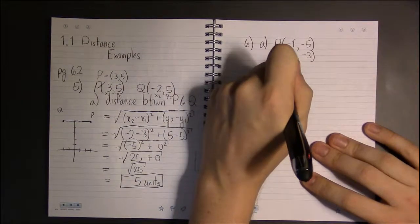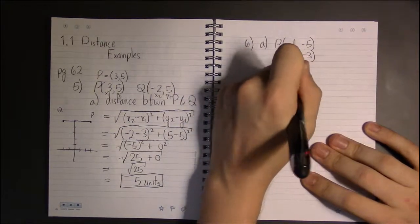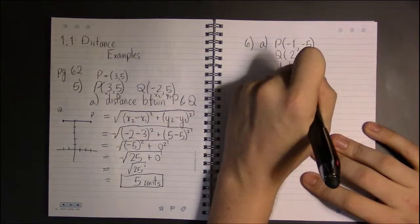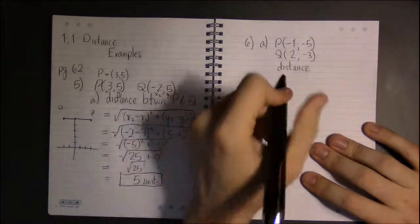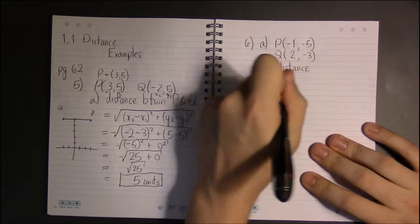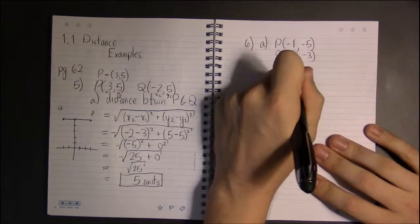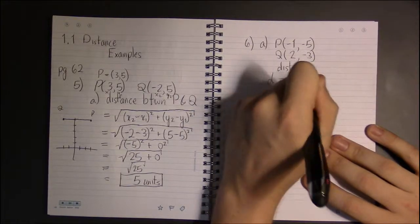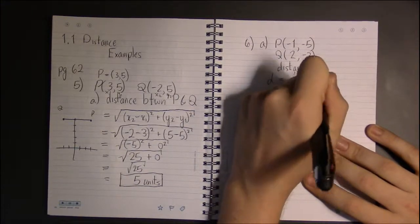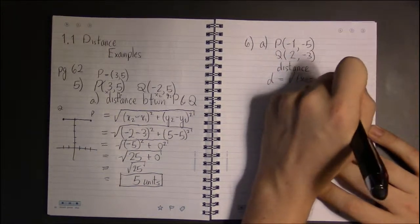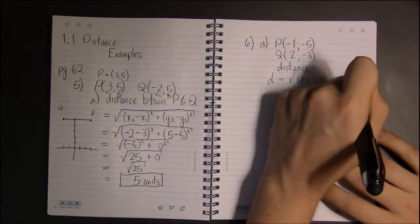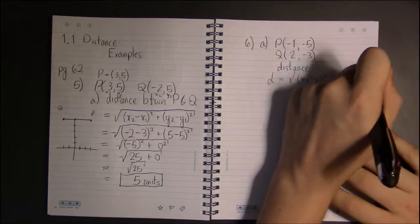If we're going to find the distance between these two points, then we need this distance formula. This distance d is simply the square root of (x2 - x1)² + (y2 - y1)².